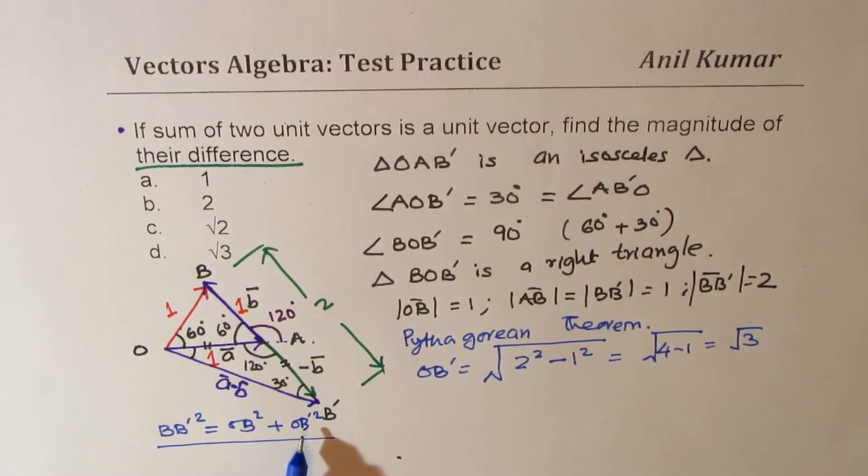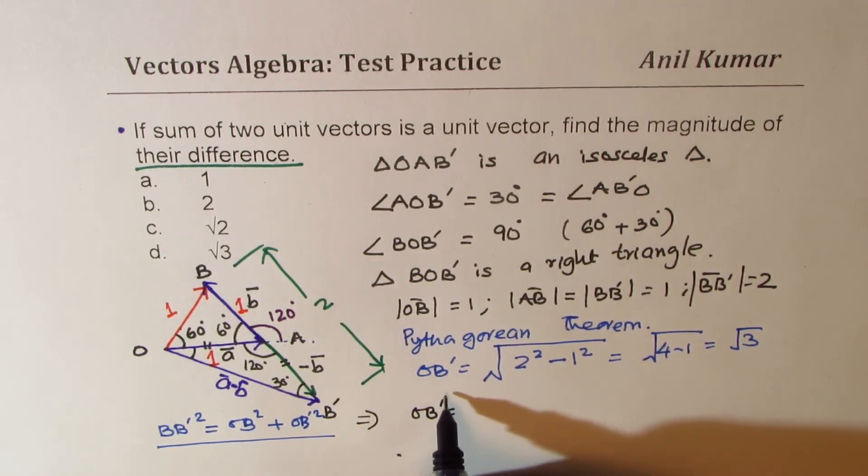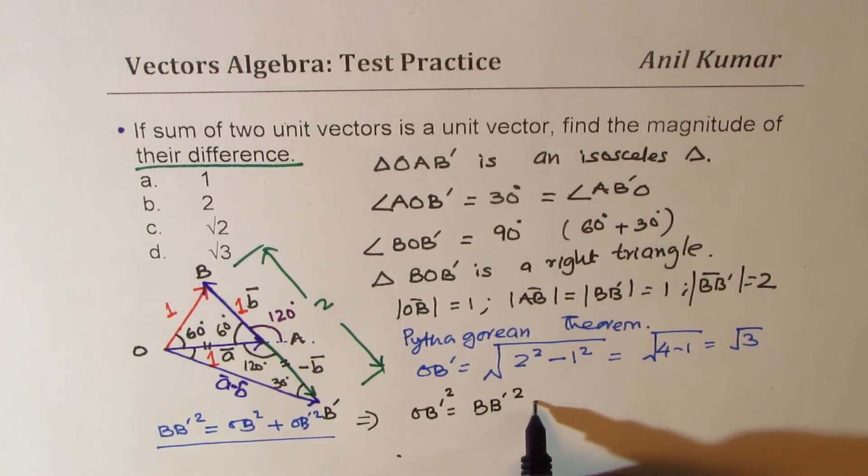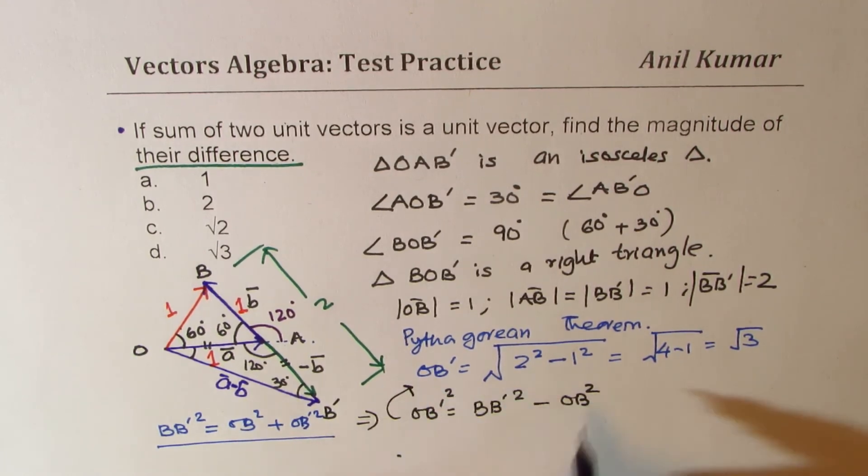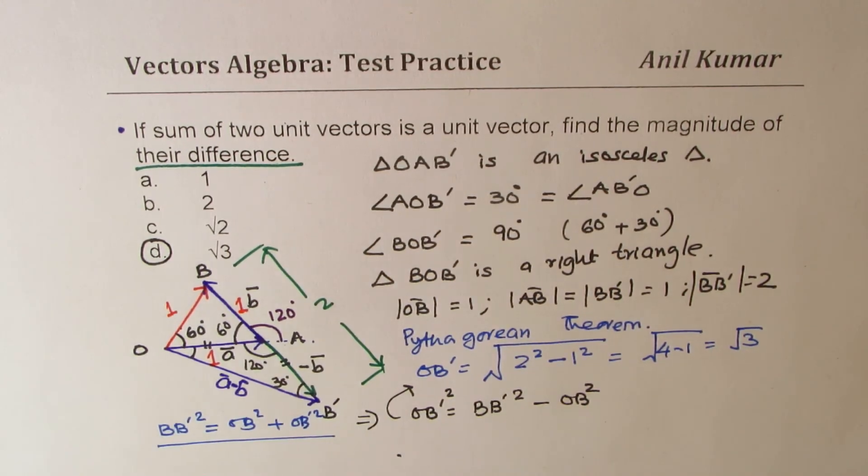So if you rearrange, then ob dash square will be b, b dash minus ob square. So basically, from here, I just missed these steps. So this square should be equal to b, b dash square minus ob square. So from there, you can square root and get the answer. So you clearly see that the difference of these unit vectors is going to be square root 3, which is option d, perfect.